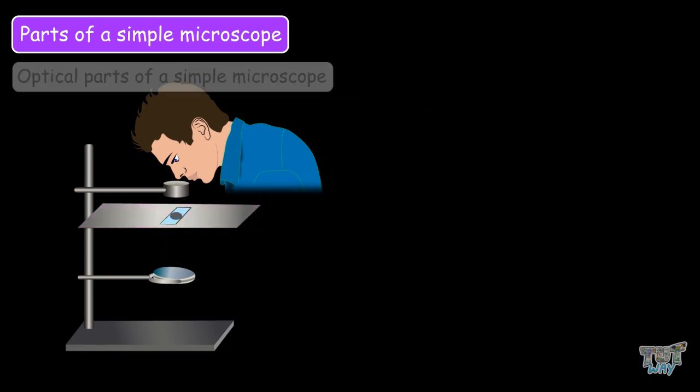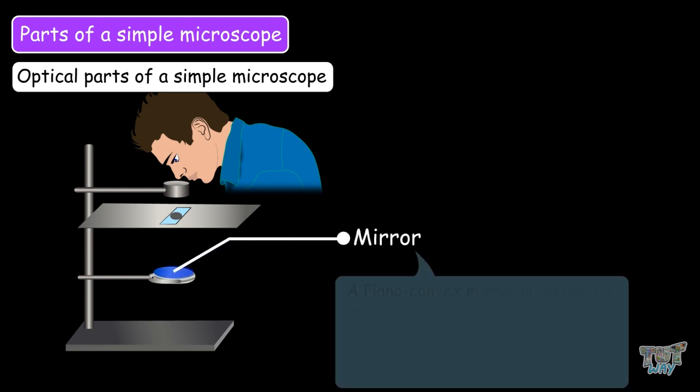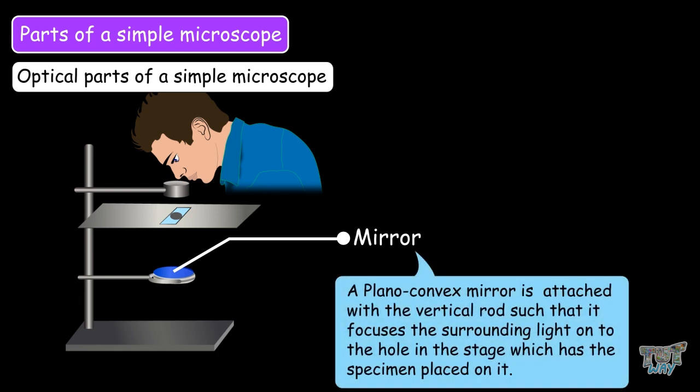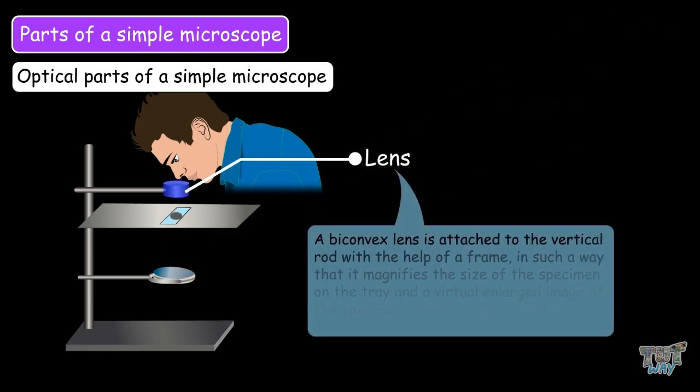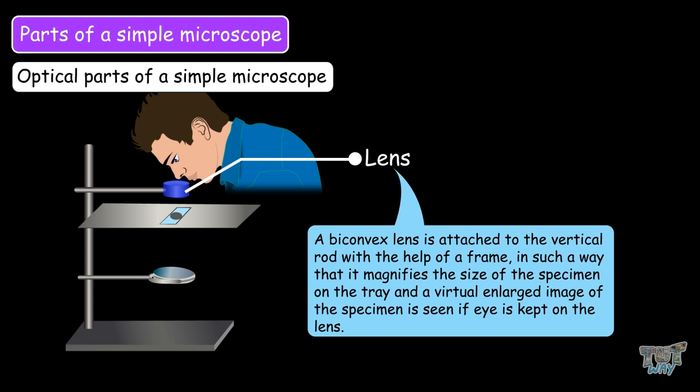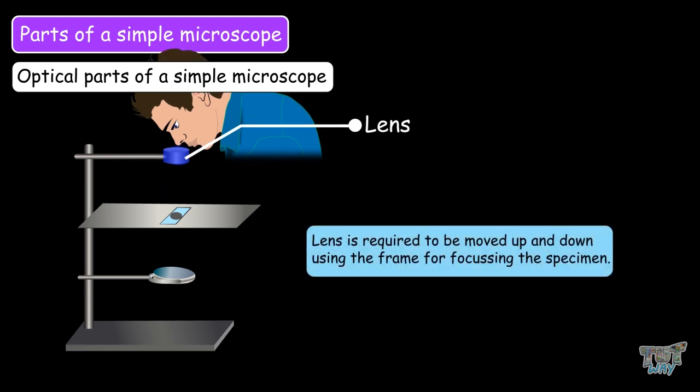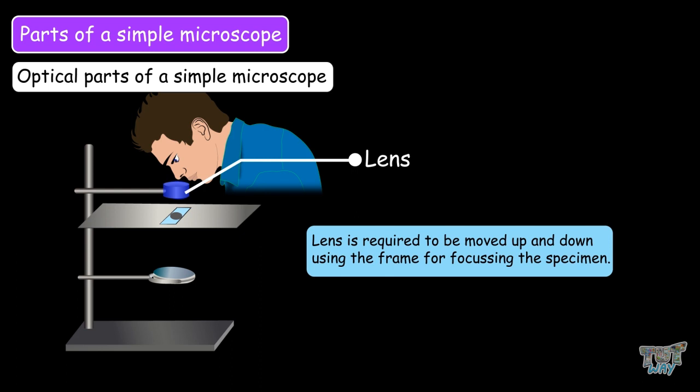Now let's learn the optical parts of the simple microscope. First one is the mirror. Plano-convex mirror is attached with the vertical rod such that it focuses the surrounding light onto the hole in the stage, which has the specimen placed on it. Second is the lens. A bio-convex lens is attached to the vertical rod with the help of a frame, in such a way that it magnifies the size of the specimen on the tray, and a virtual enlarged image of the specimen is seen if the eye is kept on the lens. The lens is required to be moved up and down using the frame for focusing the specimen.